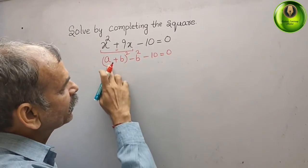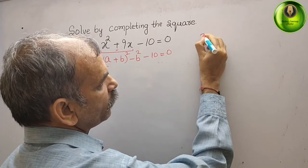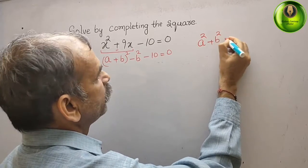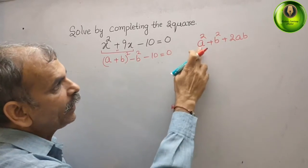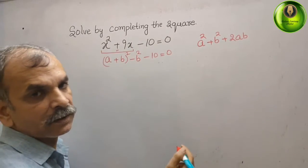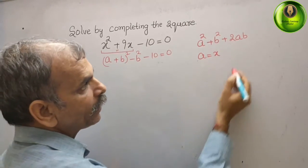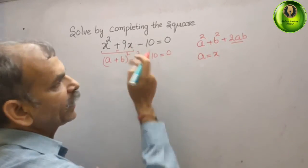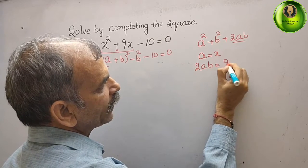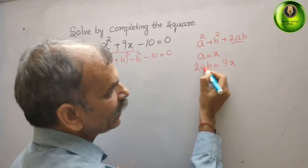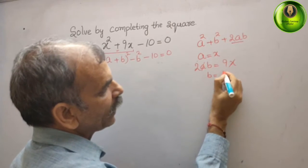We will write the formula for (a + b) whole square, that is a squared plus b squared plus 2ab. Now compare a squared with x squared — we get a is equal to x. Compare plus 2ab with 9x: 2ab equals 9x, and since a is x, we get b is equal to 9 by 2.